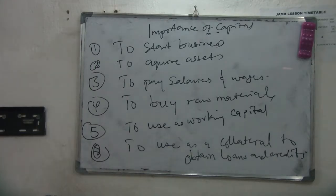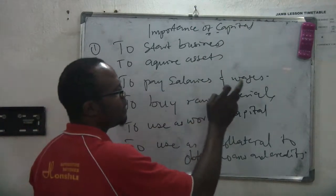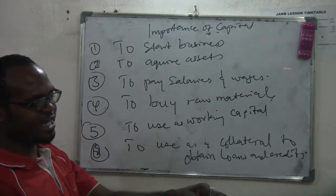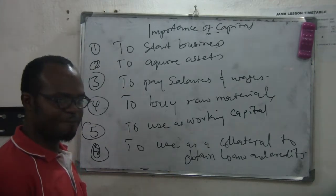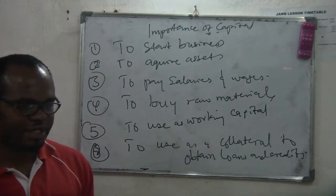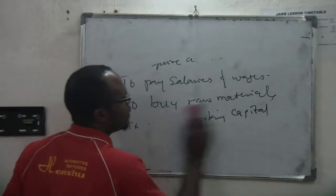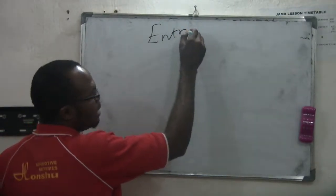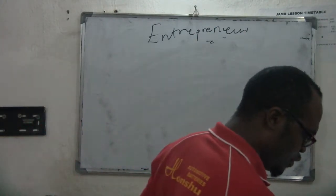Number four, you need capital to buy raw materials. And number five, you need capital to use as working capital — to use in buying and transporting yourself and basic things. And finally, number six, we use capital as collateral to obtain loans and credits.